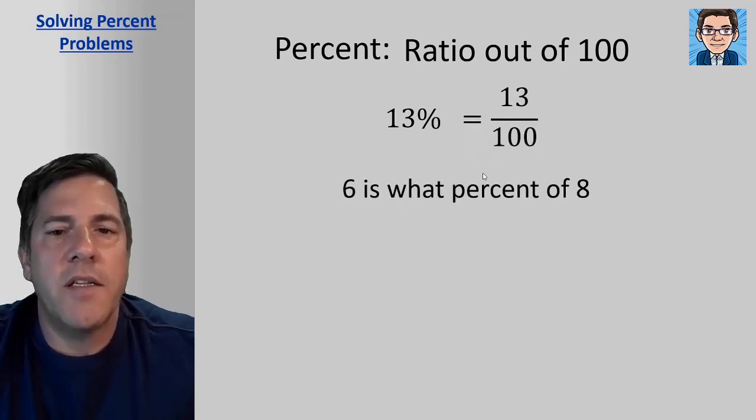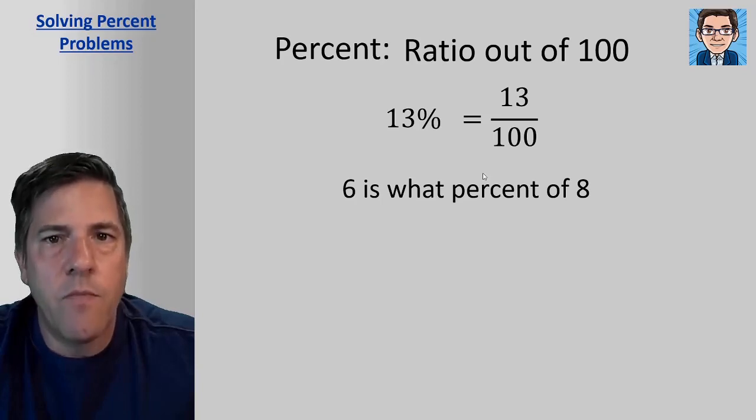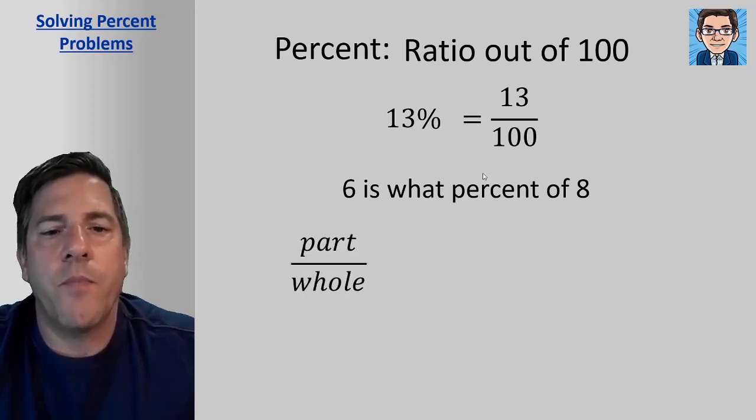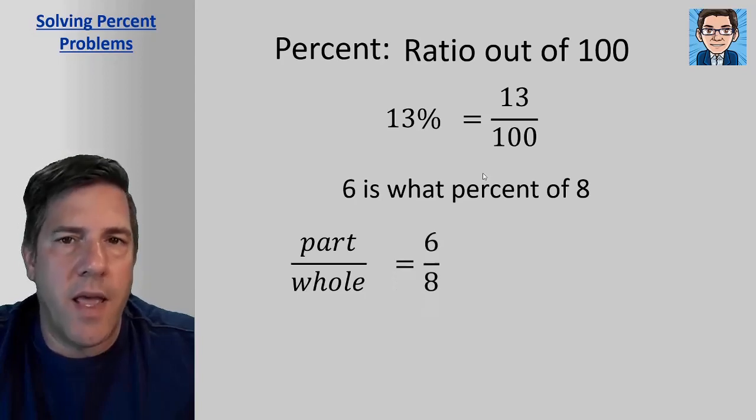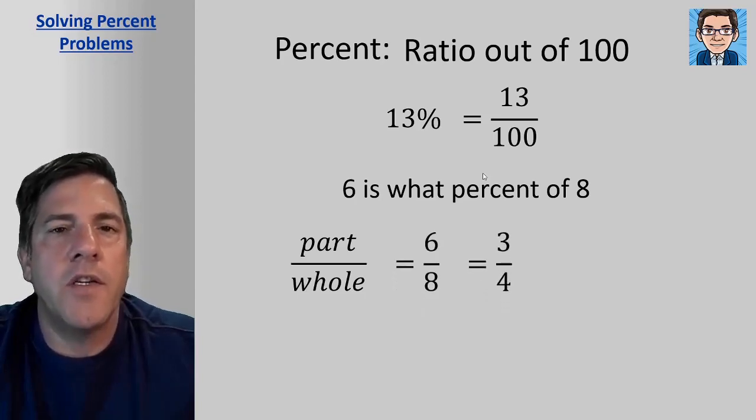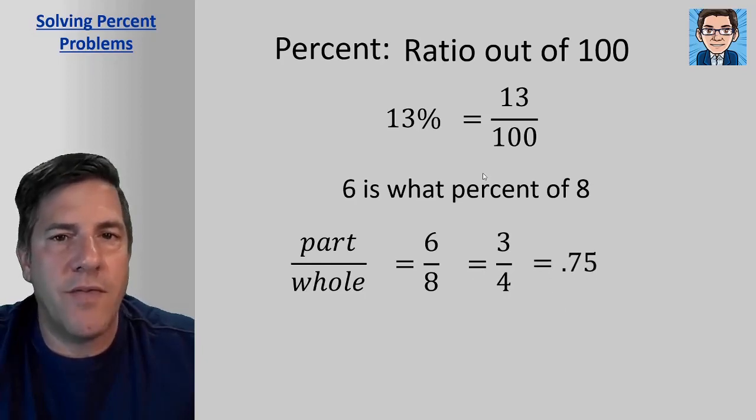So to find a simple percent, six is what percent of eight? We can take that ratio of part over whole. So six divided by eight, we reduce that fraction and change it to a decimal. We get 0.75.